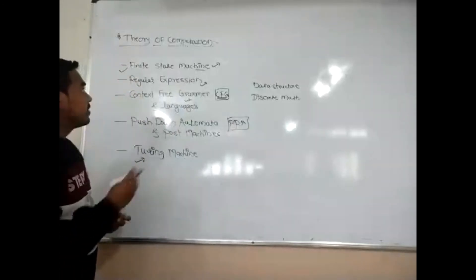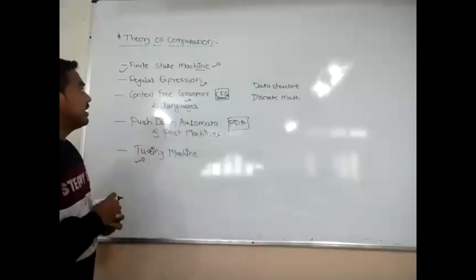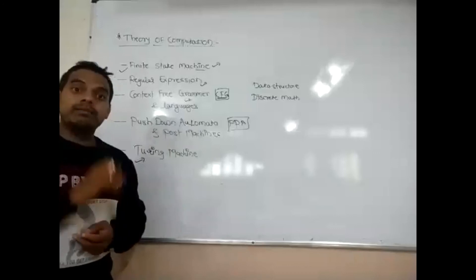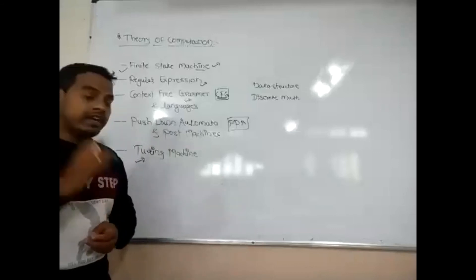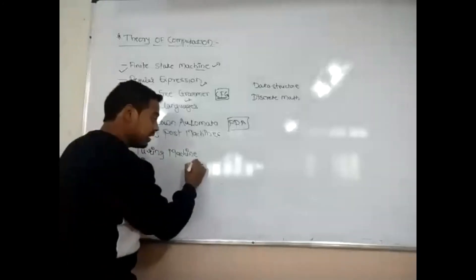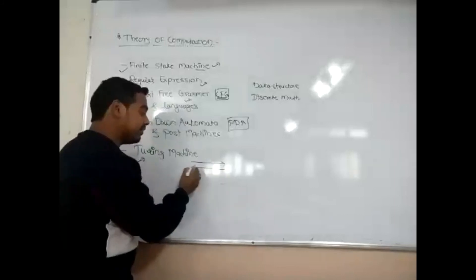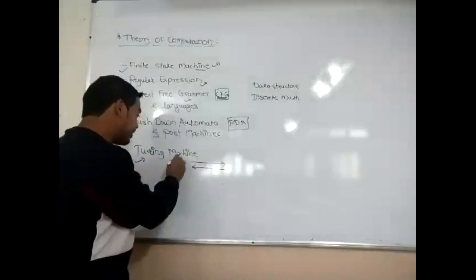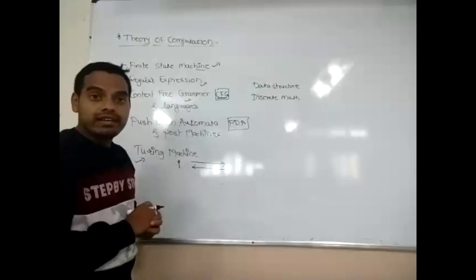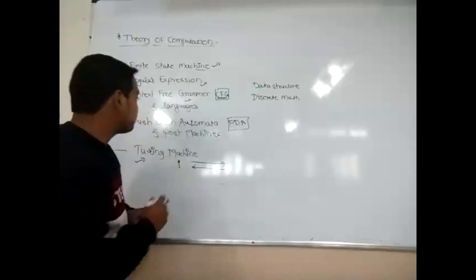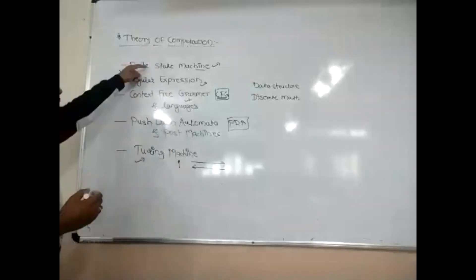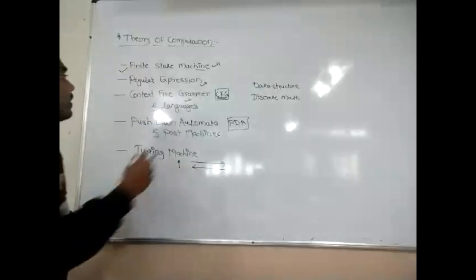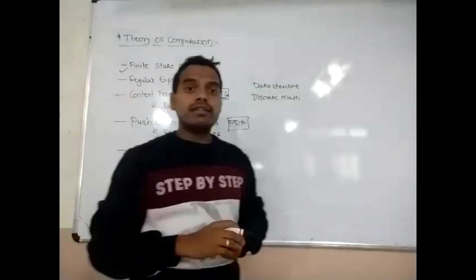All these automata — finite state machine, regular expression, context free grammar, pushdown automata and post machine — move in only one direction. But when we consider the Turing machine, it moves from left to right as well as right to left during machine or problem evaluation. So all these units are available in Theory of Computation, and we will study each and every unit one by one.